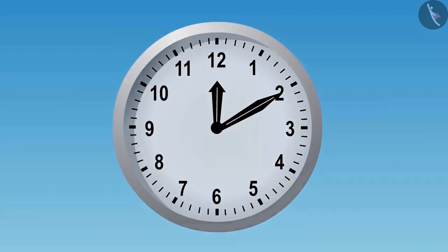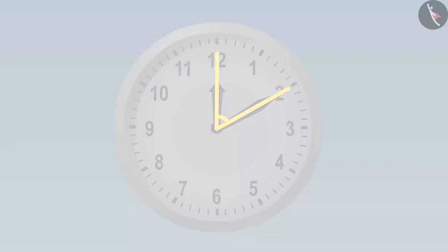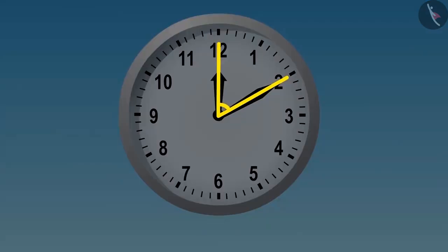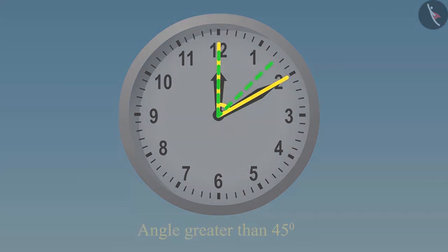See this, I have made 10 minutes past 12 in this clock. Look. This is less than 90 degrees. But is this angle less than 45 degrees as well? Angle 45 degrees is half of 90 degrees. That means approximately this much. But this angle is this much. That means this angle is greater than 45 degrees.